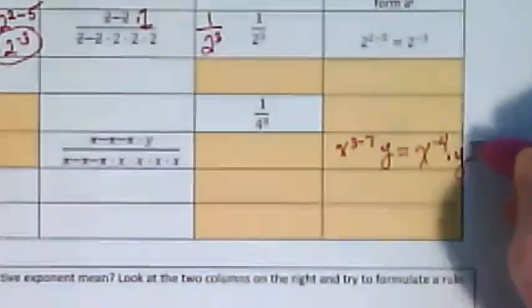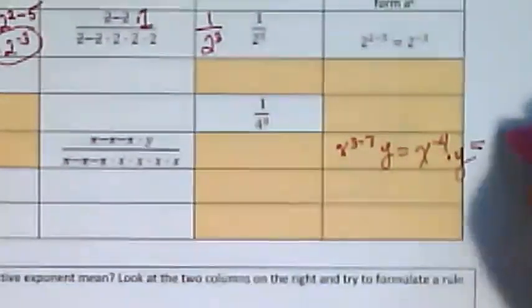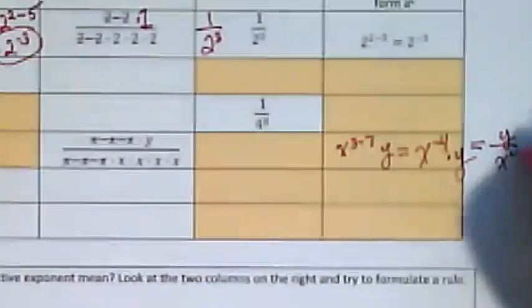And how would we rewrite that? Without a negative exponent, that would be rewritten as y over x to the fourth.